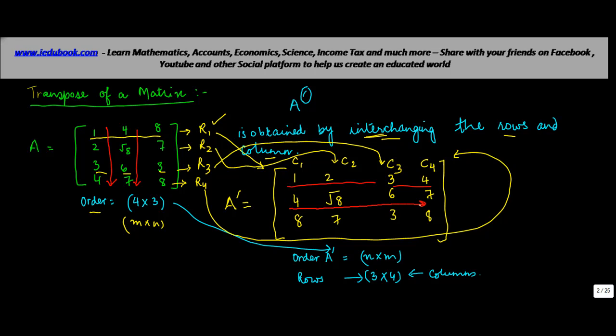So, C2 actually became R2. C1 became R1. And C3, 8, 7, 3, 8 became actually R3. So, basically, the transpose of a matrix was obtained by interchanging the rows and the column. Through certain examples, we will be seeing various properties relating to the transpose of matrix.